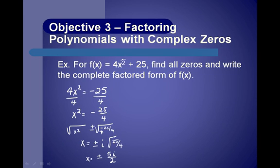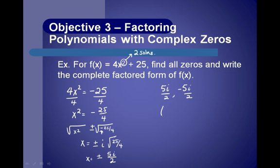Because our degree is 2, we're looking for two solutions and we found them: 5i/2 and −5i/2. To write it in factored form, you just change the sign, so that's (x − 5i/2)(x + 5i/2).